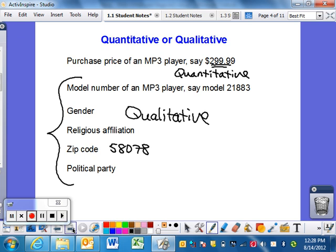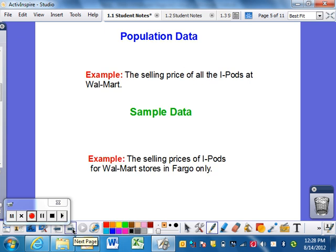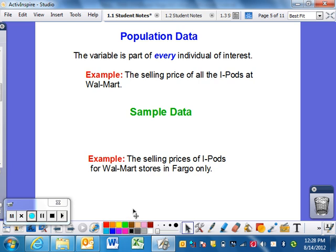Population data versus sample data. If you think of the population of West Fargo, it's everybody who lives there. Population means everything - every part of the individual of interest. It can be a state, a nation, or more specifically the selling price of all iPods at Walmart.